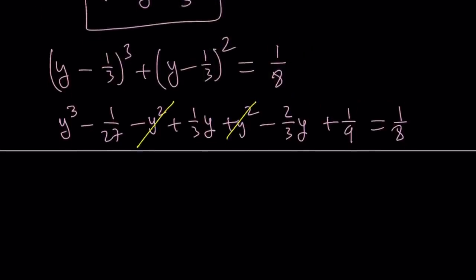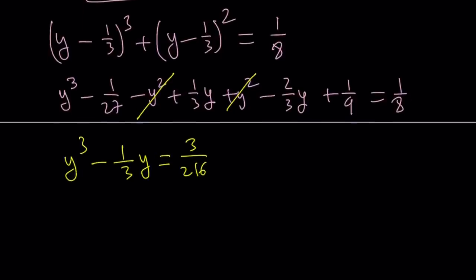And then let's go ahead and combine like terms and turn this into a reduced cubic. y cubed minus 1 over 3y equals 3 over 216. If you subtract 1 over 9 from 1 over 8, that's what you get. And here, obviously, we would like to simplify this as much as possible. Obviously, not just 1 over 8 minus 1 over 9. We also have to add the 1 over 27. That's how we got that number.